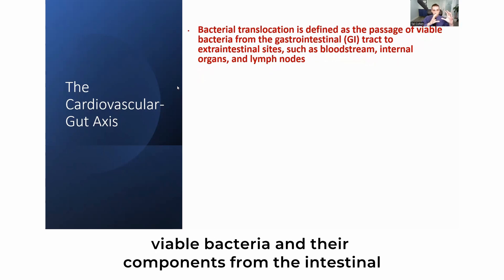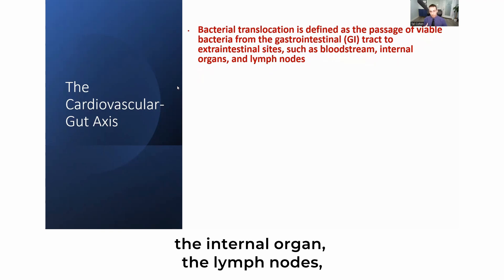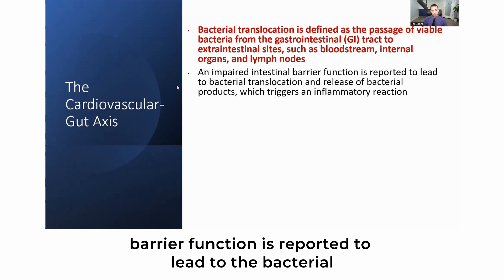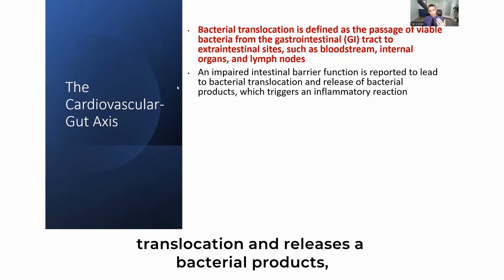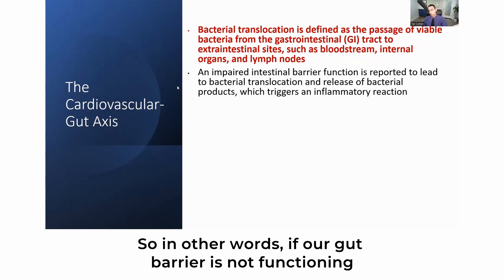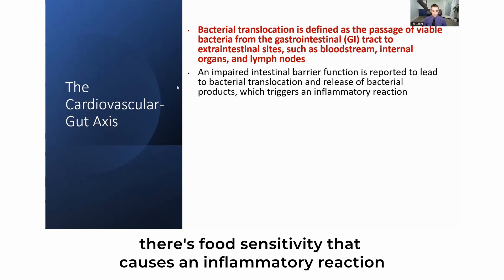Bacterial translocation — the passage of viable bacteria and their components from the intestinal tract into extra-intestinal sites such as the bloodstream, internal organs, and lymph nodes — is reported when the intestinal barrier function is impaired. This leads to the release of bacterial products, which triggers an inflammatory reaction. In other words, if our gut barrier is not functioning properly, there is chronic inflammation.